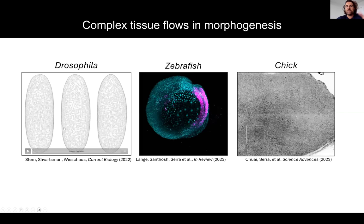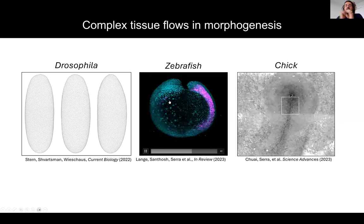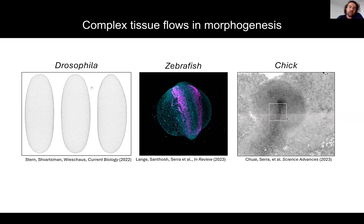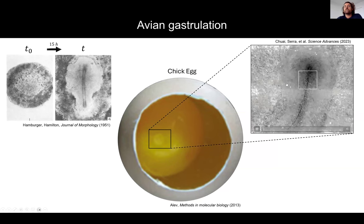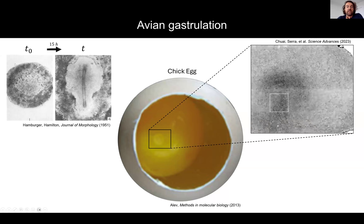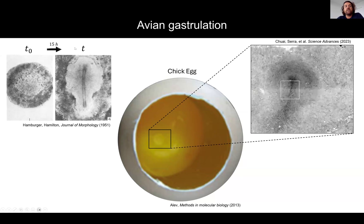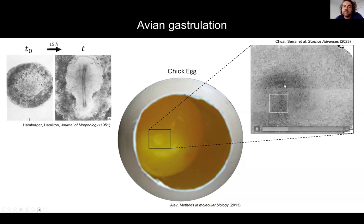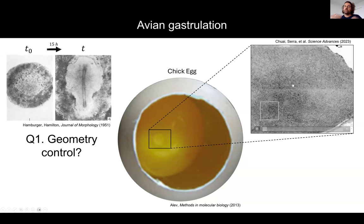It's very well known that in early development, cells undergo large-scale motion at the embryo scale across model systems. Today we'll be focusing on chick or avian gastrulation. In chick gastrulation, at the very early stage of development, the embryo is just a thin disc, three millimeters wide, with about 50,000 cells. This disc sits on top of the yolk that you can visually see cracking an egg. In the first 15 hours of development, the embryo transforms from a circle into a pear-shaped structure, and you can see very big, smooth cellular flows.